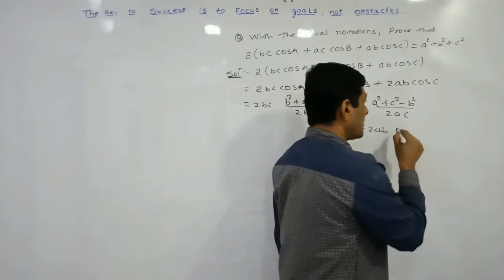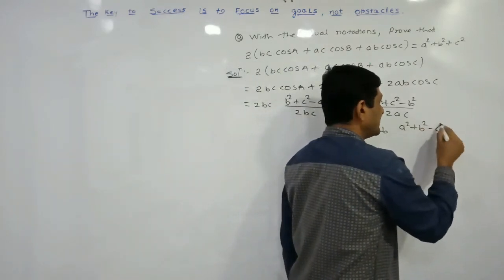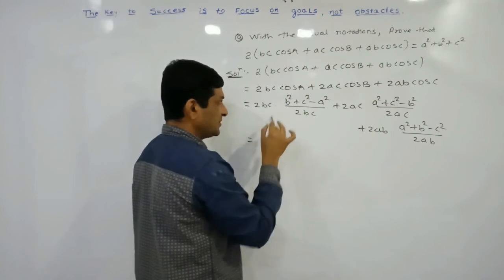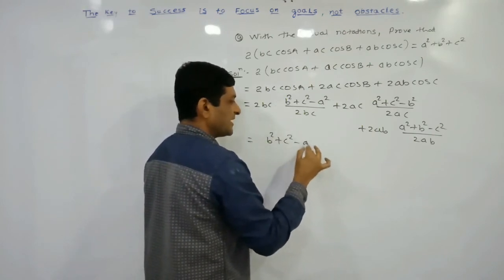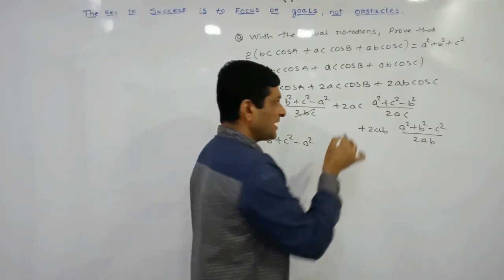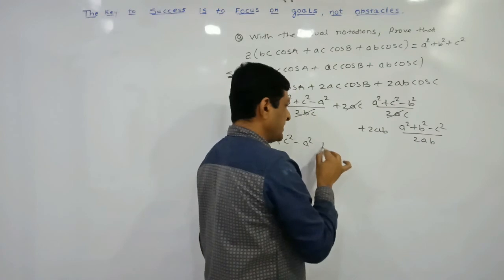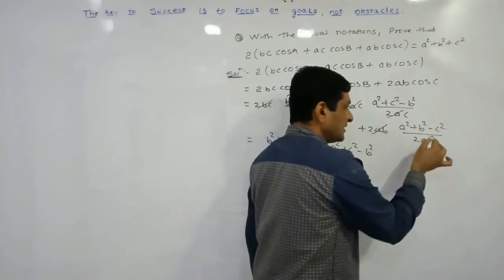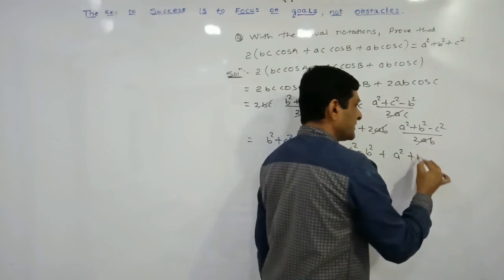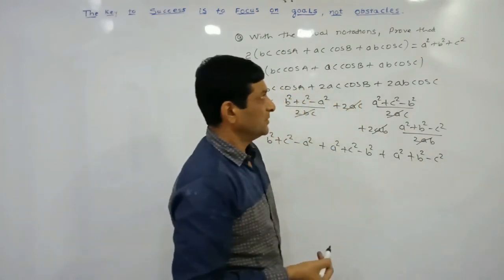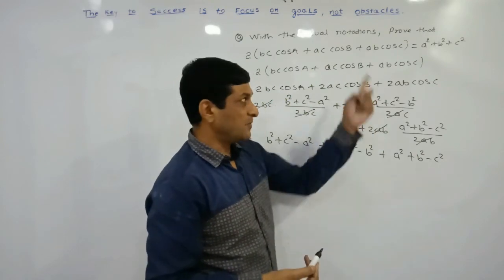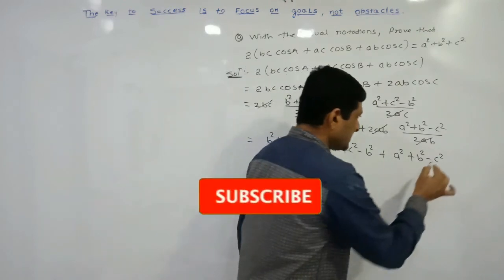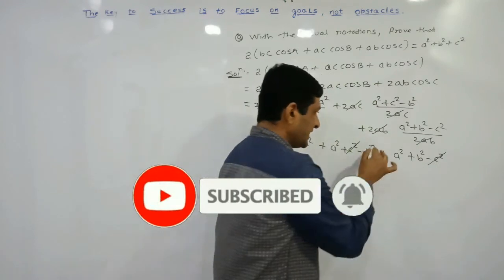After substitution: 2bc cancels with 2bc, leaving b² + c² − a²; similarly 2ac cancels, leaving a² + c² − b²; and 2ab cancels, leaving a² + b² − c². So the expression equals (b² + c² − a²) + (a² + c² − b²) + (a² + b² − c²). Now collecting terms: −c² and +c² cancel, −b² and +b² cancel, −a² and +a² cancel.